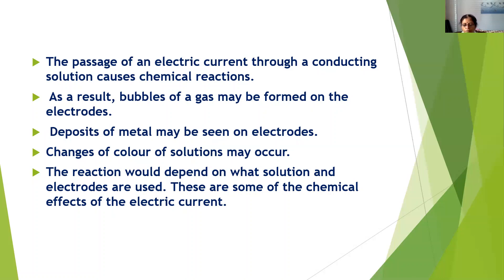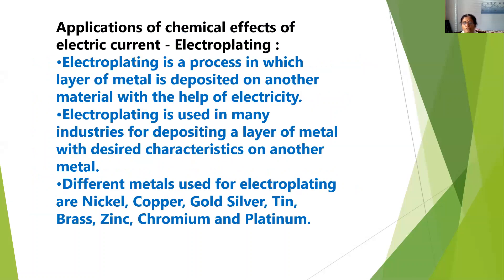The main application of the chemical effect of electric current is electroplating. Electroplating is a process in which a layer of metal is deposited on another material with the help of electricity. It is used in many industries for depositing a layer of a desired metal with desired characteristics on another metal. Metals used for electroplating include nickel, copper, gold, silver, tin, brass, zinc, chromium, and platinum.